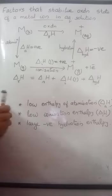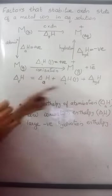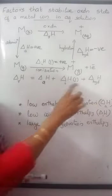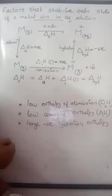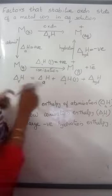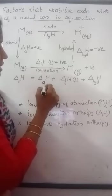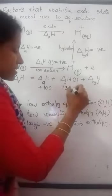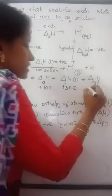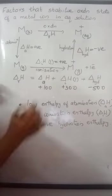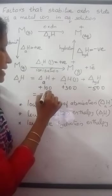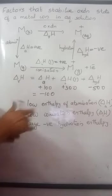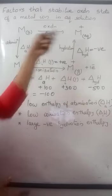For some metals, the values of atomization and ionization enthalpy may not be favorable — these two values may be higher. But if the hydration enthalpy is sufficiently large and negative, it would compensate for the high atomization and ionization enthalpy. For example, suppose a metal has atomization enthalpy of +100, ionization enthalpy of +300, and hydration enthalpy of -500. So the net result is 400 minus 500, which equals -100. This means after all these processes, 100 units of energy are released and this oxidation state is stabilized.